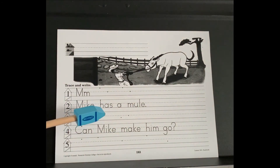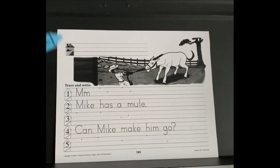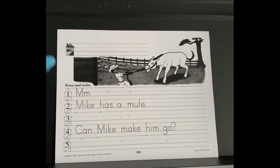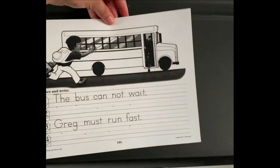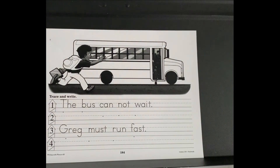Number two, trace the sentence. Number three, write the sentence from house number one. House number four, trace the sentence. House number five, write the sentence from house number four. When you have completed the front, you are going to the back of the paper. Trace and write — trace the sentence in house number one, write that sentence in house number two, trace the sentence in house number three, write that sentence in house number four.